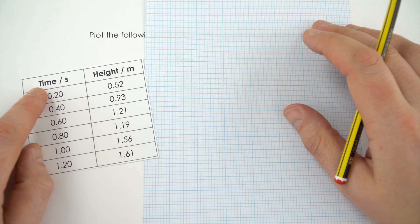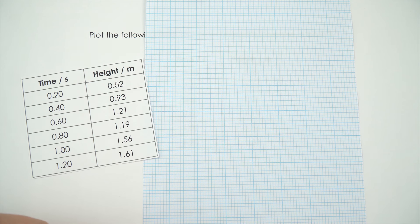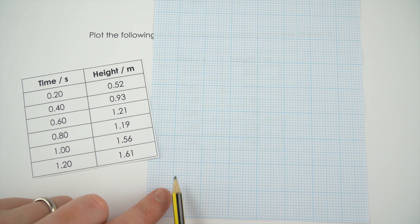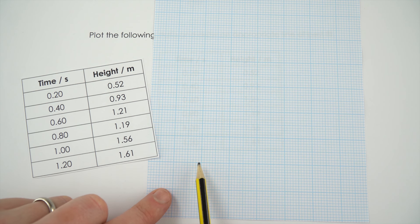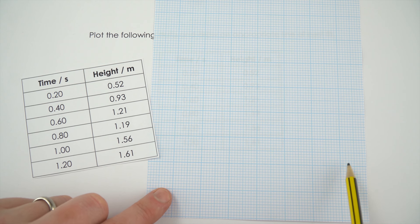Now first of all, the time is going to go from 0.2 up to 1.2, so just choosing the x-axis, if I make that 0 I can go 0.2, 0.4, 0.6, 0.8, 1, 1.2.